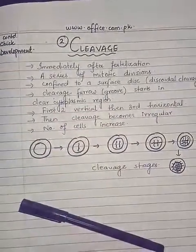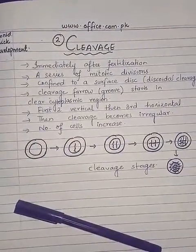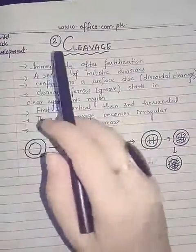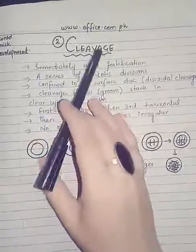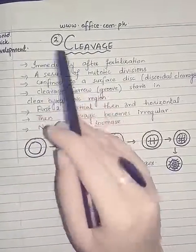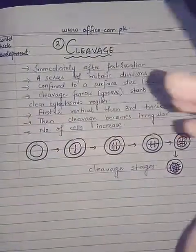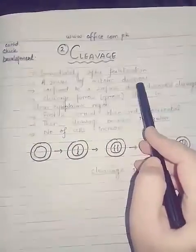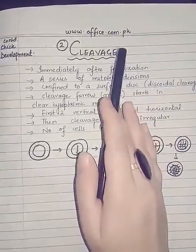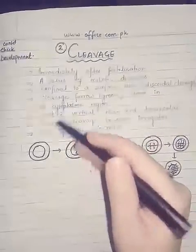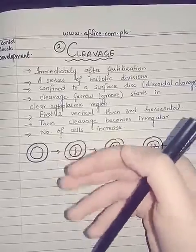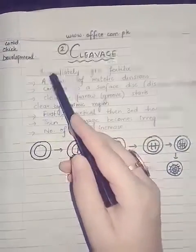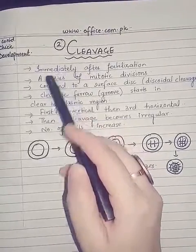Dear students, after the process of fertilization and when the egg is incubated, the development process begins. The next step after fertilization is cleavage. Cleavage is actually a series of mitotic divisions — mitosis occurs one by one to increase the number of cells, and this process occurs immediately after fertilization.